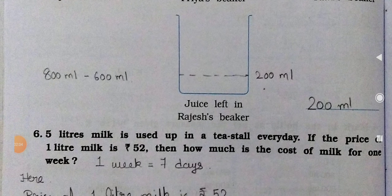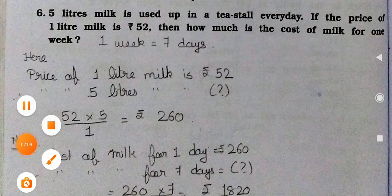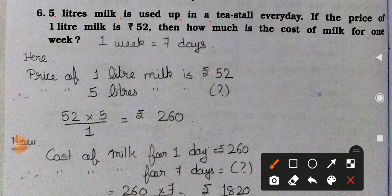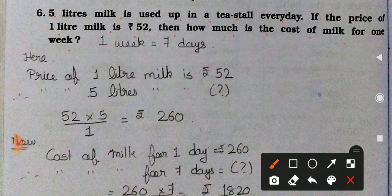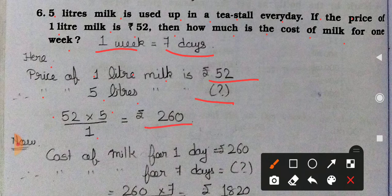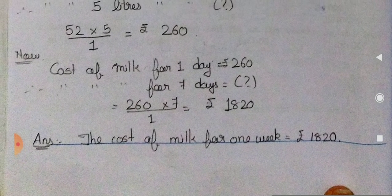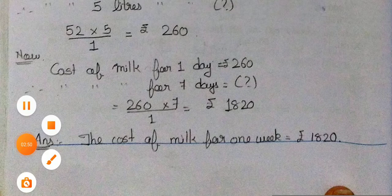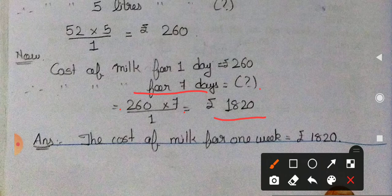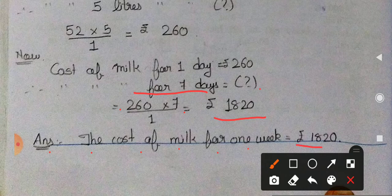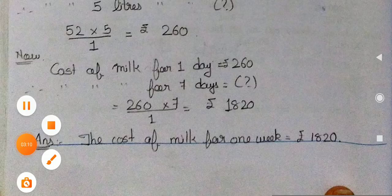Now see the next question number 6. Six and a half liters milk is used up in a tea stall every day. If the price of 1 liter milk is rupees 52, then how much is the cost of milk for 1 week? One week is equal to 7 days. Price of 1 liter milk is 52 rupees. So 5 liters: 52 multiply with 5 divide with 1 is equal to rupees 260. Cost of milk for 1 day is rupees 260. For 7 days: 260 multiply with 7 is equal to rupees 1,820. The cost of milk for 1 week is rupees 1,820.